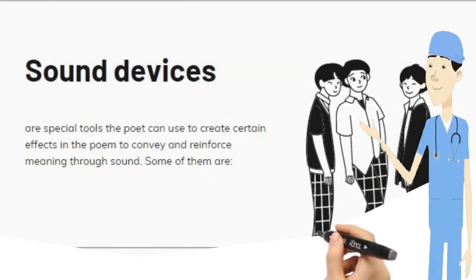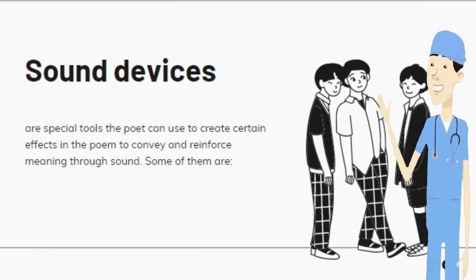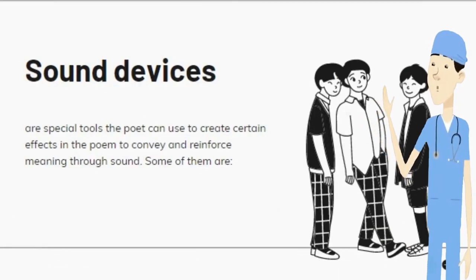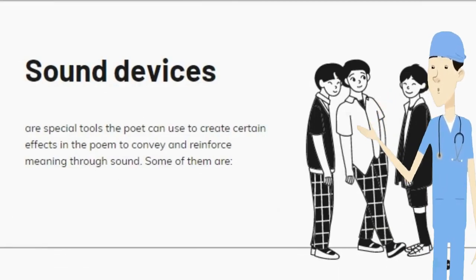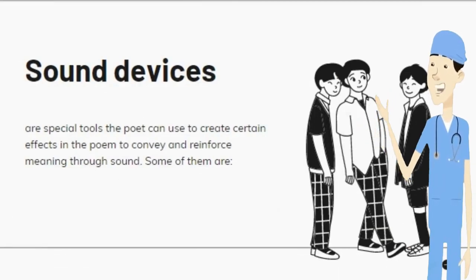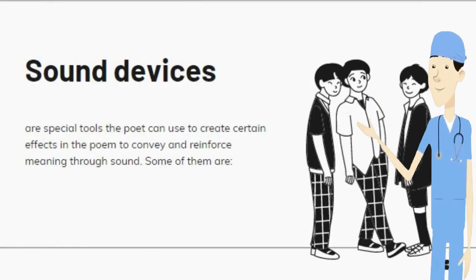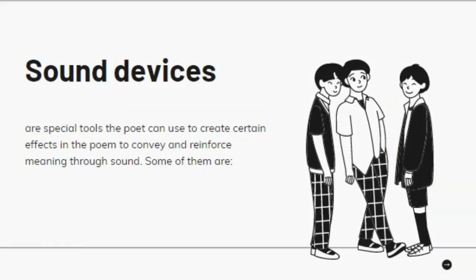Sound devices are special tools the poet can use to create certain effects in the poem to convey and reinforce meaning through sound. Some of them are as follows.